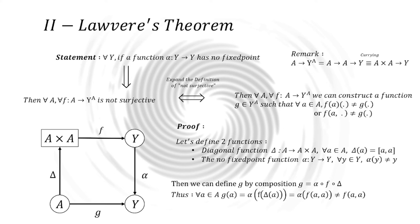For all a, let's evaluate G of a. By construction, we can rewrite the expression as alpha of F of a and a. But, if we apply the no fixed point property, it is clear that G of a is never equal to F of a and a. But, since it is called by alpha, it is always different. In other words, A to Y to the power of A is not surjective.